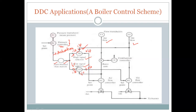The low signal selector will transmit the lowest of the two inputs. That is the function of these signals — the high signal selector and low signal selector. The signal from the high signal selector, which transmits the highest of the two signals, will provide a set point for controlling the oil flow.